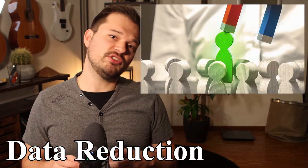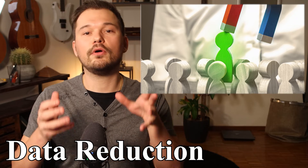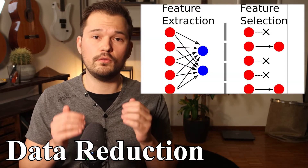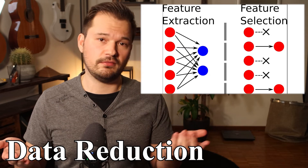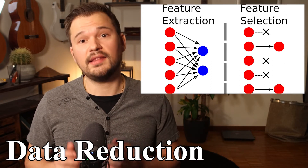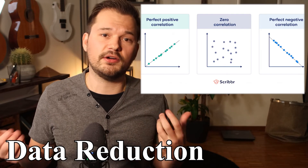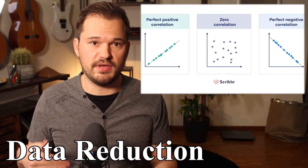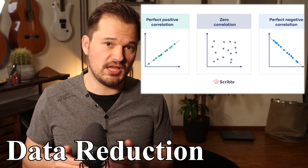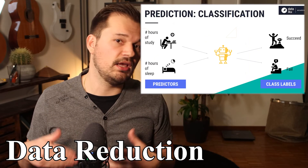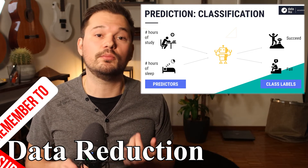Feature selection is similar to data reduction, but instead of reducing the number of samples because you have too many, you reduce the number of features because you again have too many. The most common approaches are tree-based methods or correlation-based methods, such as looking at the Pearson correlation and removing features that are not correlated with what you are trying to predict.